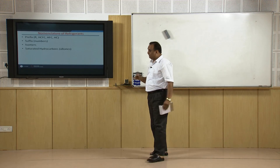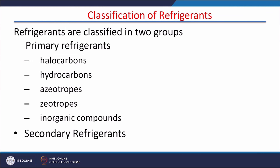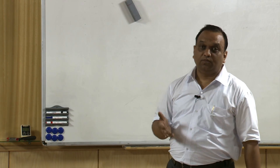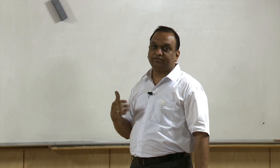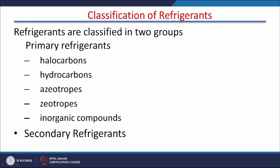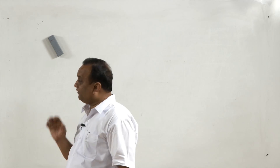Now we will take the different classes of refrigerants one by one. Refrigerants can be classified as primary refrigerants and secondary refrigerants. Primary refrigerants are those circulated in the system — like R134A, air, or ammonia — and they are often in direct contact with the substance on which the refrigerating effect is produced.